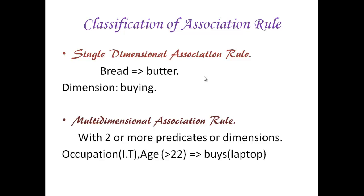Next one is multi-dimensional association rule. As the name indicates, it has two or more dimensions. Consider the example: if a person of age 22 and occupation is IT, buys laptop. Here you have three dimensions. One is occupation, the next one is age, and the last one is buy.